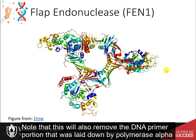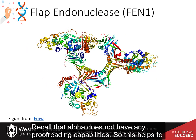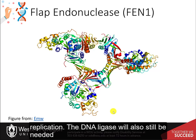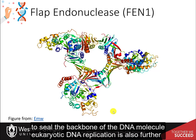Note that FEN1 will also remove the DNA primer portion laid down by polymerase alpha. Recall that alpha does not have any proofreading capabilities, so this helps to ensure that there are no mistakes made by the alpha polymerase during DNA replication. DNA ligase will also still be needed to seal the backbone of the DNA molecule.